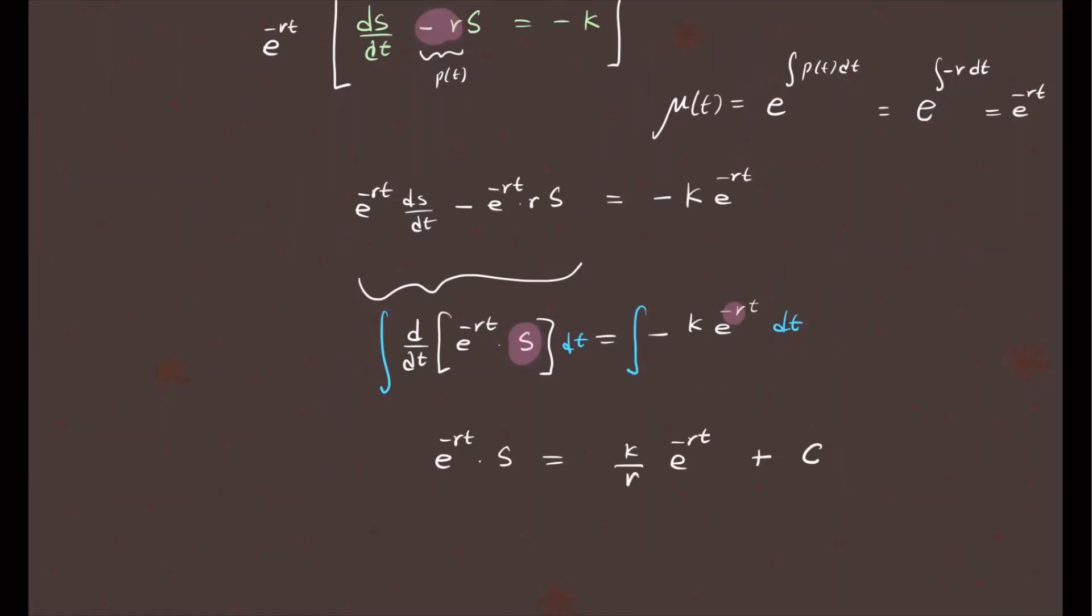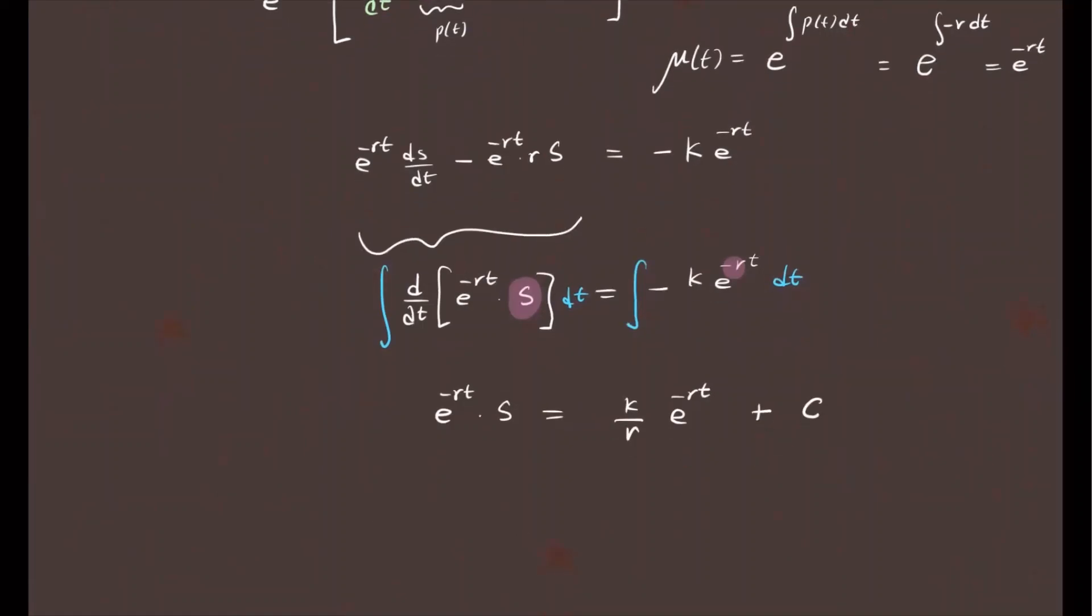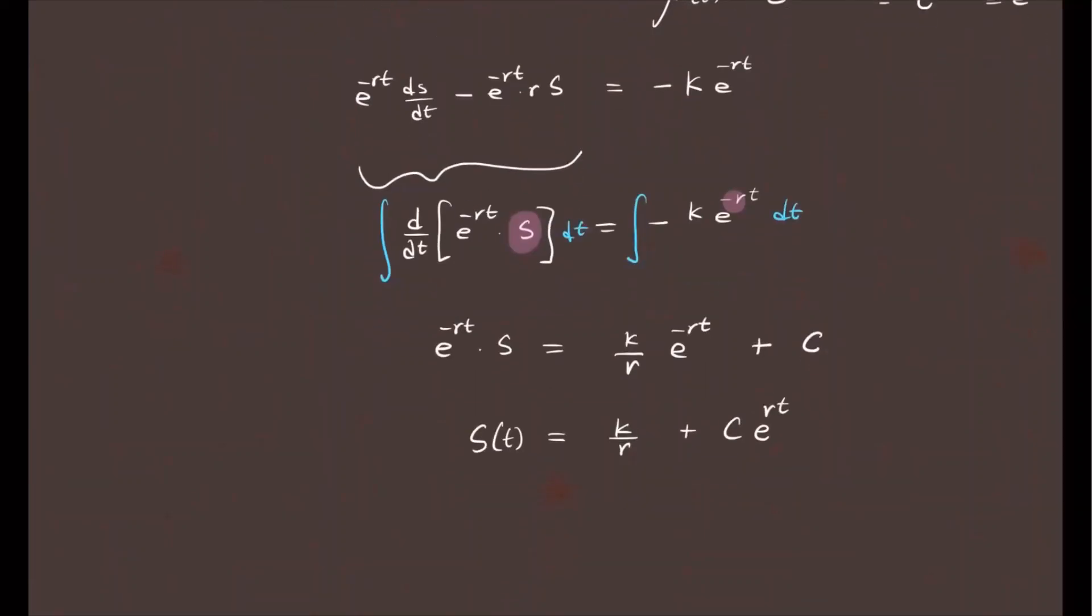And finally, we solve for our function S of T. S of T equals, divide both sides by e to the negative Rt, you have K over R, e to the Rt will cancel, plus C times e to the positive Rt. Since we divided by e to the negative Rt on both sides, that's how we got that. All right, so that is our model that's going to design this problem.